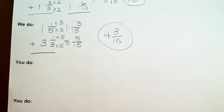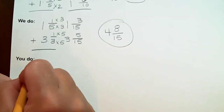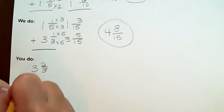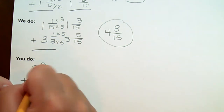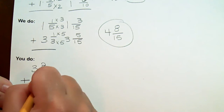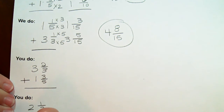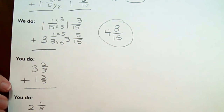I'm going to pause the video and have you work the last two problems. They are: three and two-thirds plus one and three-fifths, and two and one-third plus four and four-sevenths. The good thing about having these on video is that you can go back and watch anytime. I'll give you a little time to work these and then we'll come back and work them together.